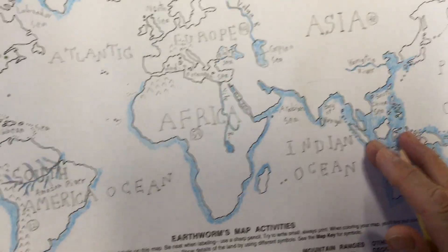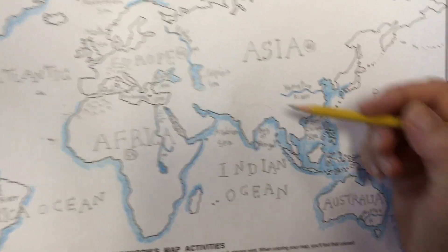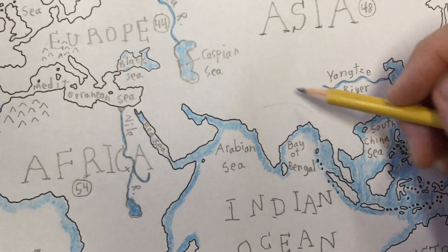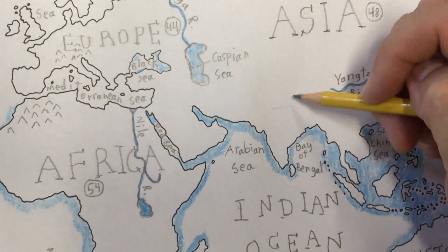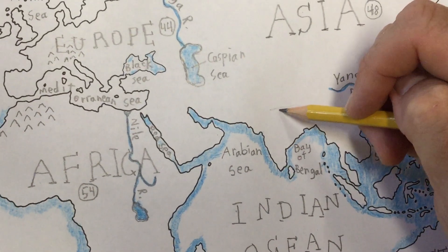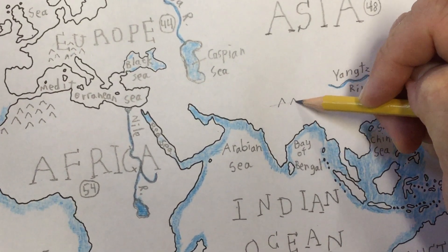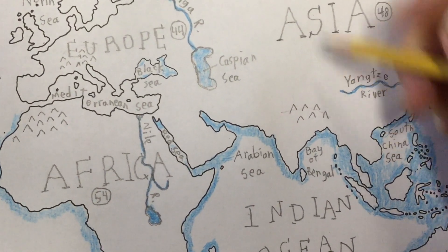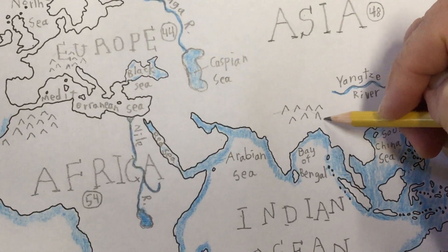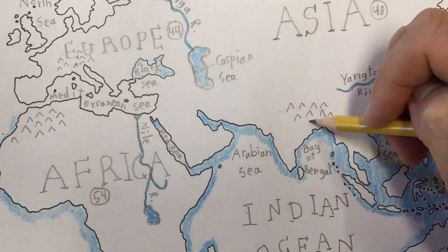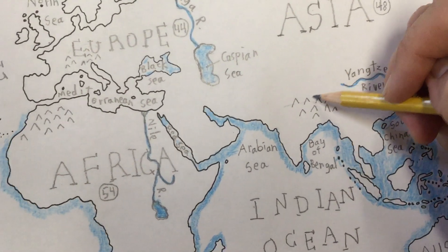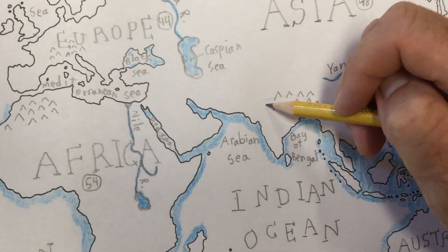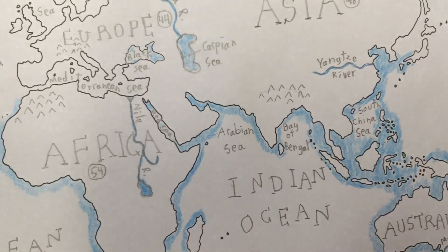The next mountain range is the Himalayas, located north of India, right along the Chinese-Indian border in that area. I believe Mount Everest is located in the Himalayas, which is the tallest mountain in the world. There's a nice group of mountain symbols — those are the Himalayas.